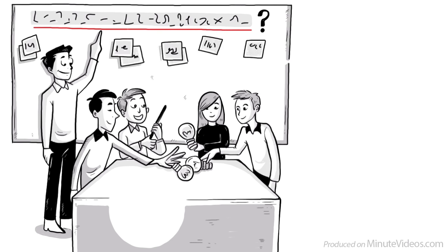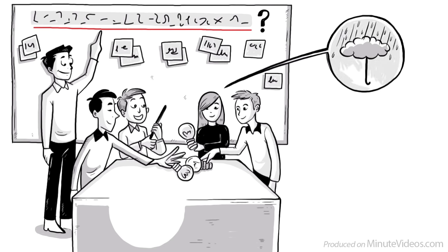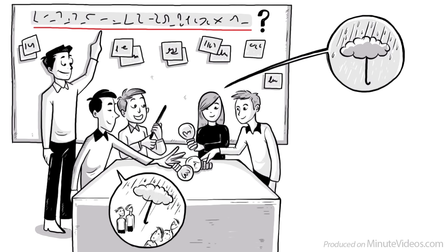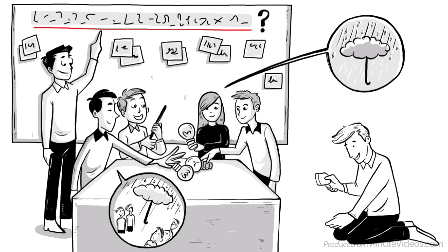Remind people to add on to ideas. If Anne thinks of, let's build a cool umbrella, Jay can say, yes and let's make it one that flies too. If someone did kill a good idea, the facilitator can always bring it back to life to throw it back on the table.